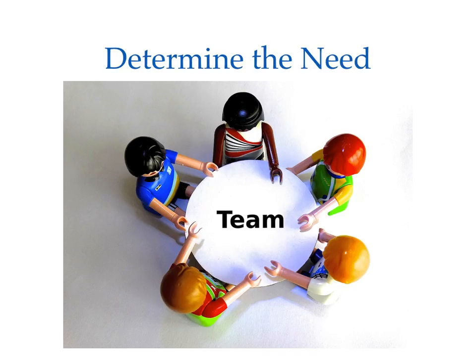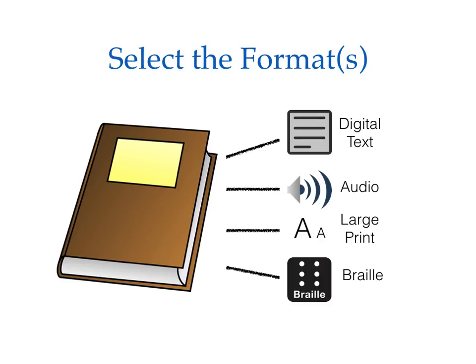A team, including the student, determines if AIM is needed by asking the essential question: can the student access and learn from standard print materials? If the answer is no, the team moves on to select the specialized format or formats that the student needs, recalling that the four formats are digital text, audio, large print, or braille.